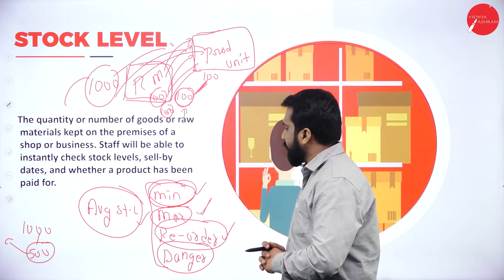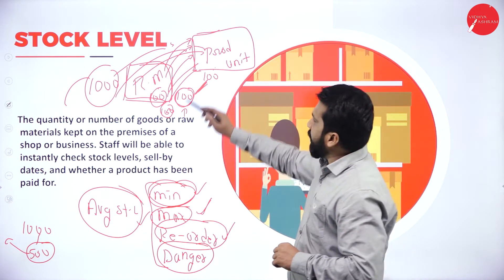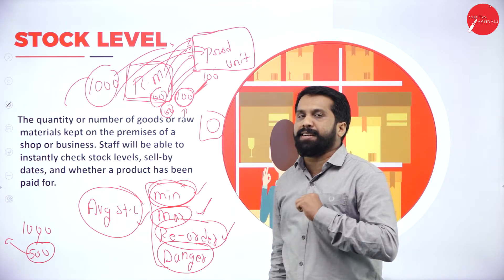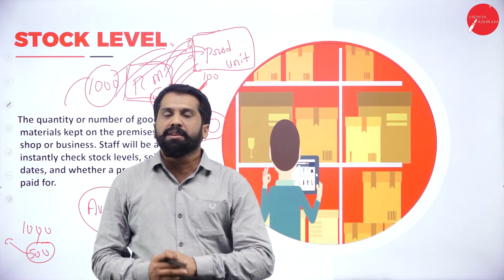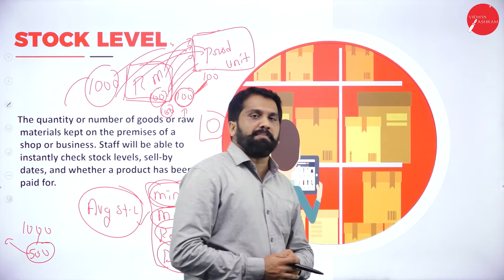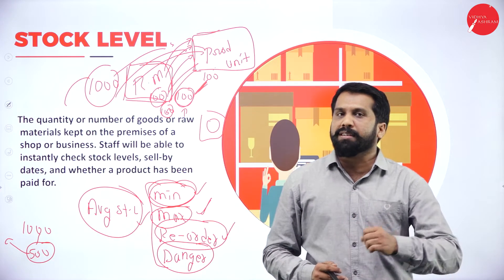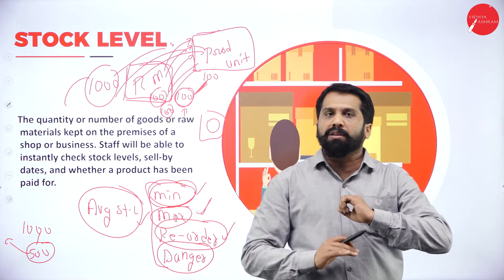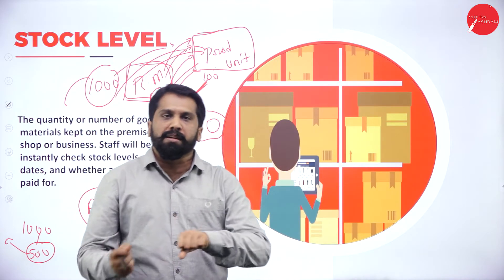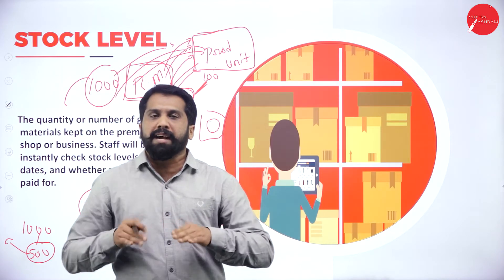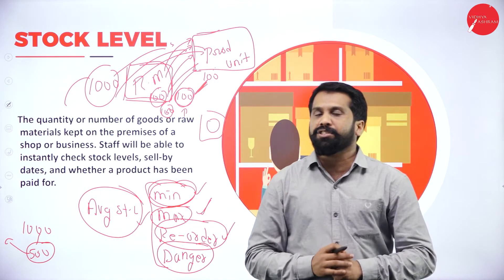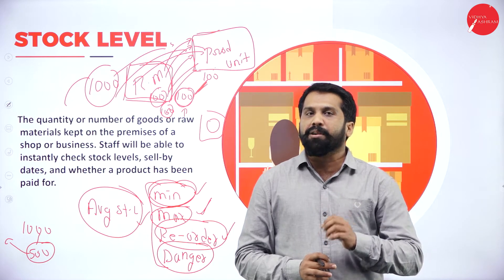Danger stock level — danger means you are in production, 100 units have been given out, and your raw material is at zero. Tomorrow is Sunday, and if you order now you won't get material until Monday, so you need to stop production. It's like being on a bike where the fuel is almost at the bottom and the fuel station is two kilometers away — you're praying you make it. That is called danger level.